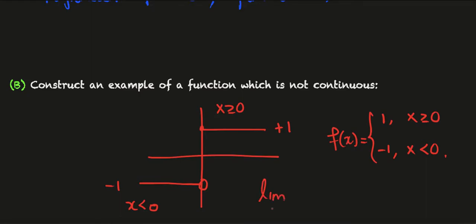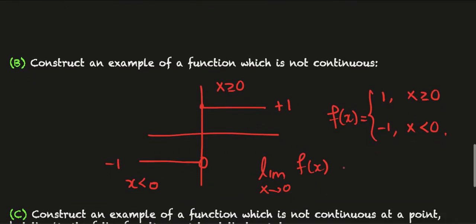Here if we try to compute the limit as x tends towards zero of f of x, then the left limit is equal to minus one, the right limit is equal to one. So this limit does not exist and in particular the function is not continuous.